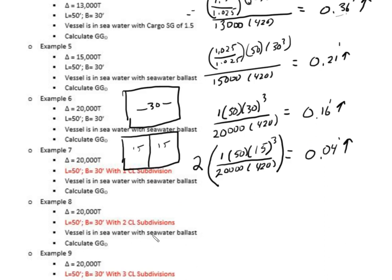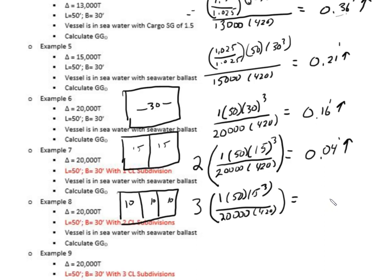So, let's do another one here. This one's got two subdivisions. All right. So, if it's 30-foot across, and now we put two subdivisions, well, we're going to make three 10-foot tanks, right? So, it'll be 10, 10, and 10. So, we're going to have to multiply all that stuff by three. Well, that's one times 50, times 10 cubed, divided by 20,000, and 420. And, when we do all that, we will get a GGO of 0.02. Actually, it's a little bit less than this, but I rounded it up.